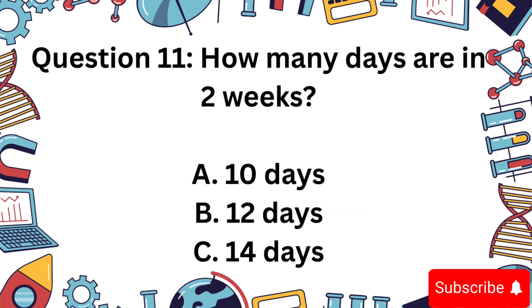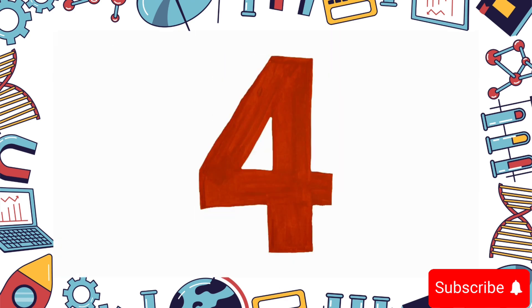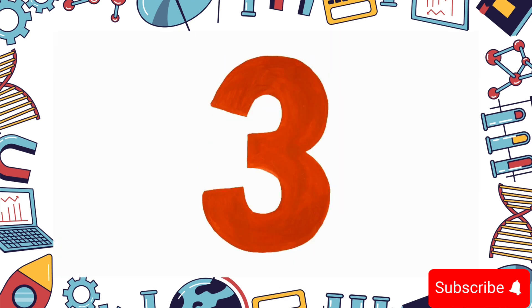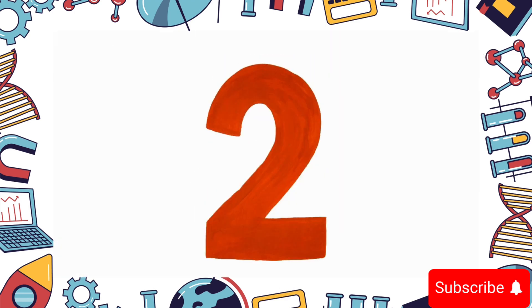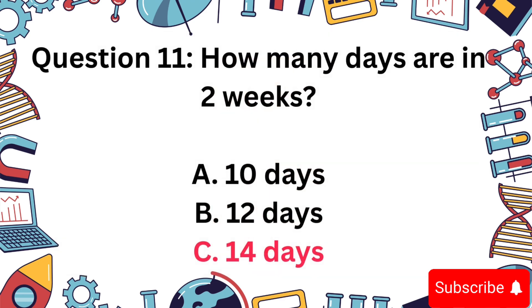Question 11. How many days are in 2 weeks? A: 10, B: 12, or C: 14? The answer is C: 14 days. 7 days in a week times 2 equals 14.